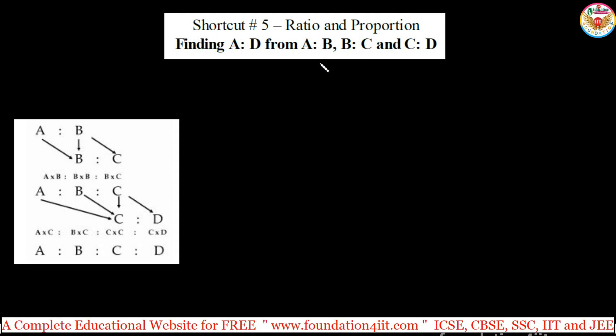In ratio and proportion, if it is given A is to B, B is to C, and C is to D, how to find out A is to D, or finding A is to B is to C is to D? Let me explain this technique here.